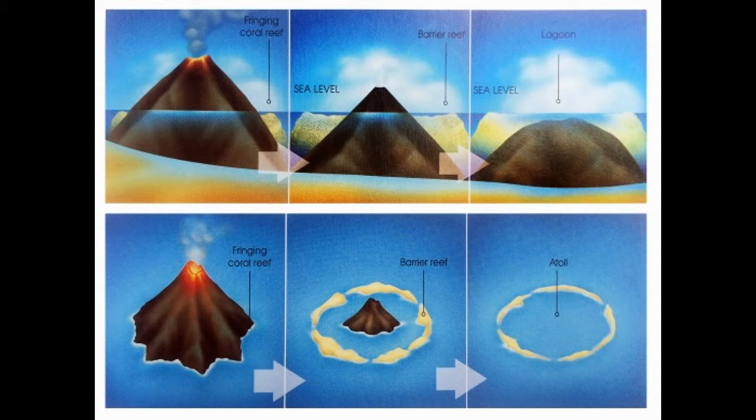It's true that atolls are found in tropical and subtropical areas. Why is that? Do you think it's where the water temperature is fairly warm? The coral and reef building algae grow best in fairly warm water.